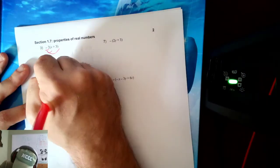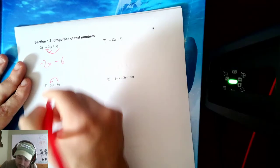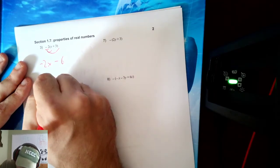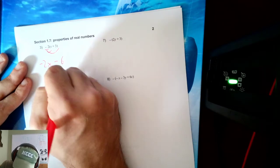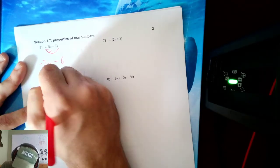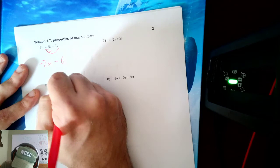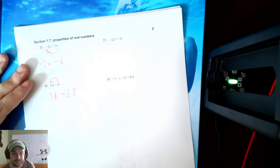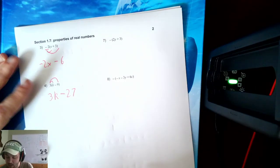Here, I've got 3 to distribute. 3 times K is just 3K. And 3 times negative 9. Well, I've got a positive 3 and a minus 9 will be minus 27. 3K minus 27.